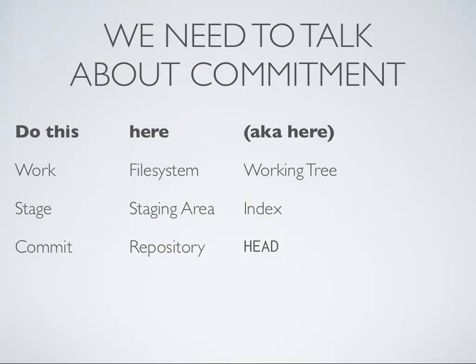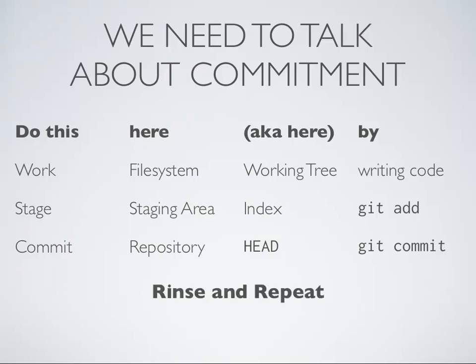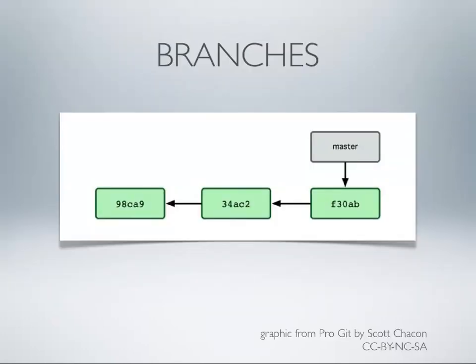You work in the file system, you stage in a staging area that Git has, and you commit to the repository. In Git talk: you work in the working tree, you stage to what Git calls the index — the staging area is called the index — and you commit to HEAD. HEAD, all capital letters, is Git's term and always means the spot where your commit is going to go on top of if you were to commit. It can change locations — if you change branches, HEAD moves to the new branch. So HEAD is not what you think of from CVS or Subversion; it bears no relation to what it means in Git. HEAD is a pointer that says 'my commit is going to go here.' We do these things using the commands git add and git commit — work, git add, git commit — rinse and repeat.